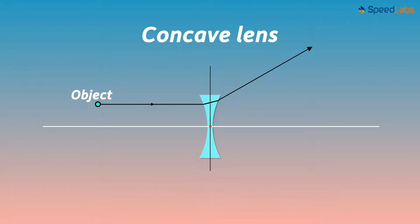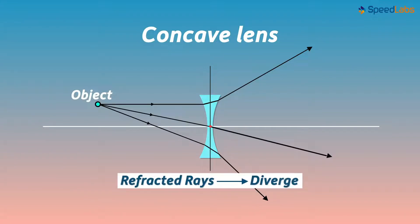If the rays from a point object are incident on a concave lens, then after refraction they do not converge at a single point. These refracted rays diverge. It means they go away from each other.